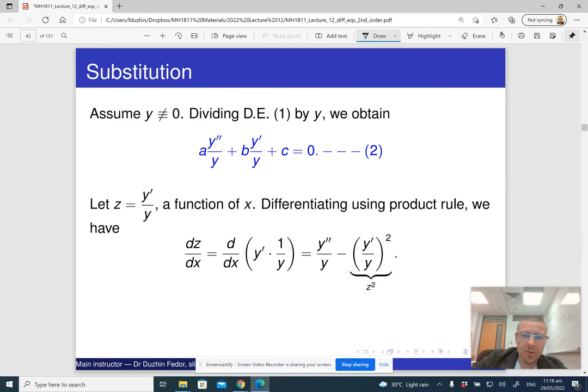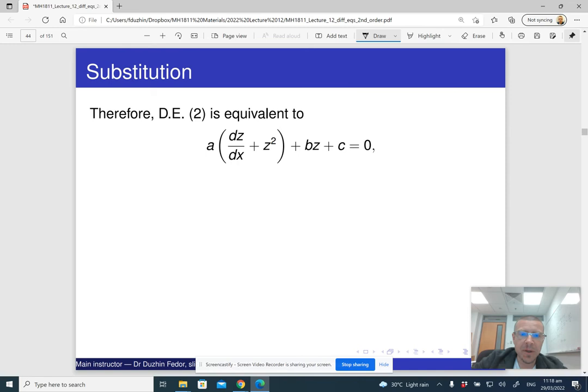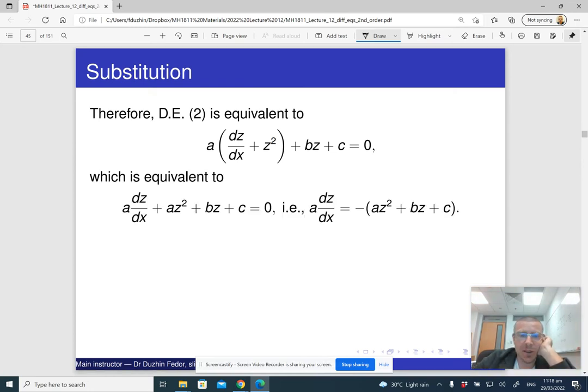Alright. So basically, this is what we just obtained. Now, in order to solve it, we need to move everything with x to the right-hand side and everything with z to the left-hand side. And doing that, we get something of this. This is a simple algebraic transformation, so I hope I don't have to explain this.